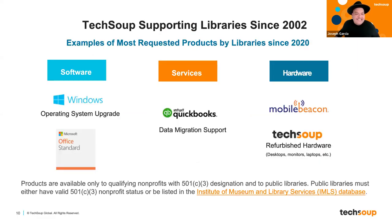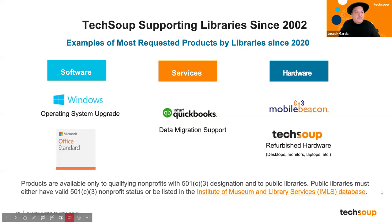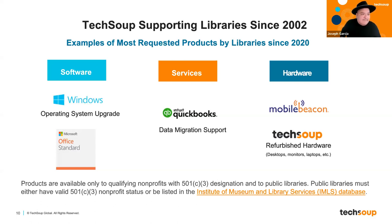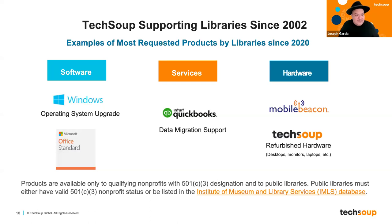TechSoup has been supporting libraries since 2002. We recently looked into what libraries were purchasing from TechSoup over the last few years. The most requested products by libraries since 2020 include software like the Windows operating system upgrade and Office standards; services like QuickBooks data migration support, which is a growing vertical for us; and hardware, with Mobile Beacon as the top hardware item, followed by TechSoup refurbished hardware including desktops, monitors, and laptops.